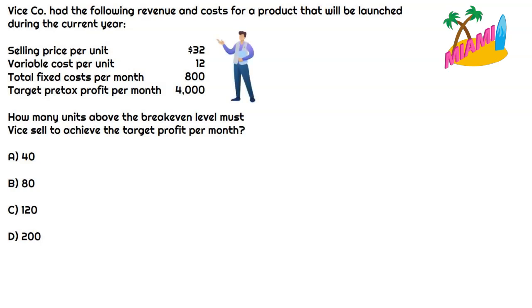We have some information about a product that Vice is going to be launching during this year — some selling price per unit info, some variable costs, total fixed costs per month for this product, as well as the target pre-tax profit per month. Ultimately, we need to figure out how many units above the break-even level must Vice sell to achieve the target profit per month.